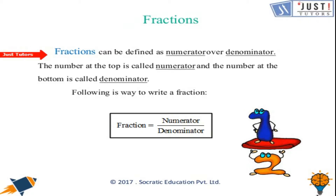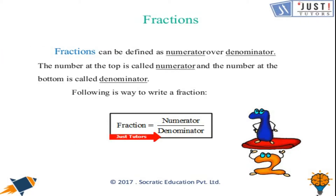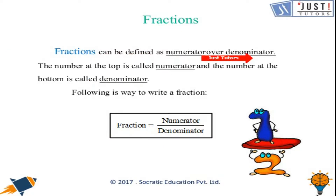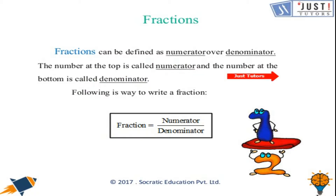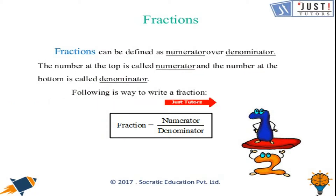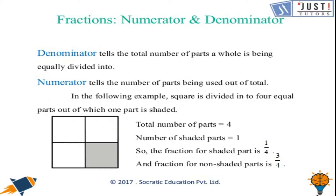What is a fraction? Something written as numerator over denominator is known as a fraction. The top number is known as the numerator and the bottom number is known as the denominator. A fraction is written as numerator over denominator.